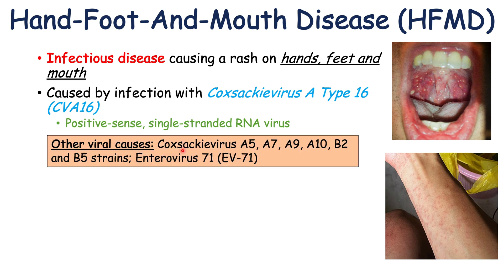These include Coxsackie viruses A5, A7, A9, A10, B2, and B5 strains, along with enterovirus 71, or EV71.